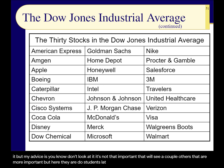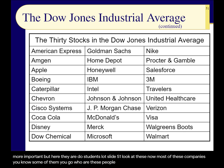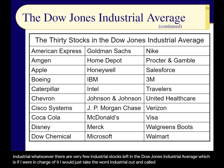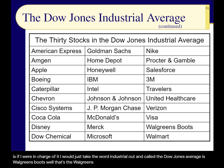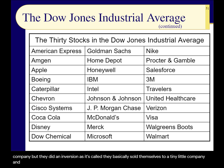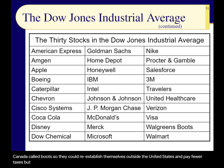Slide 51 shows the current Dow components. Most of these companies you know, though some you might not. Most of them have nothing to do with 'industrial' whatsoever — there are very few industrial stocks left in the Dow Jones Industrial Average. If I were in charge, I'd just take the word 'industrial' out. Walgreens Boots is the Walgreens drugstore company — they did an inversion, essentially selling themselves to a small company in Canada called Boots to reestablish outside the US and pay fewer taxes.